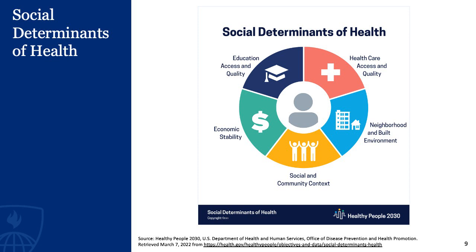We talked about how public health is implemented and coordinated by state governments as well as other actors. Now we'll transition to talk about social determinants of health and how public health can expand beyond what is normally considered health policy. Social determinants of health are factors within the environment and society in which a person lives that impact their health status. These factors include education access and quality, access and quality of health care, neighborhoods and the built environment, social and community context, and personal economic stability.